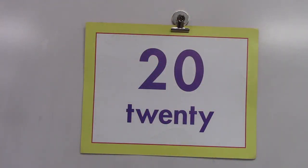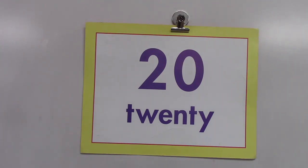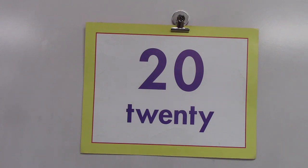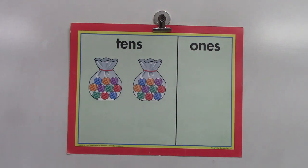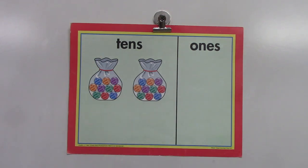Today is the 20th of March, and we're going to look at the number 20 today. Is 20 an even number or an odd number? That's right — it's an even number because it ends with a zero. There are two digits in the number 20. The first digit is in the tens place, telling us there are two groups of 10. There's a zero in the ones place, which means there aren't any extra ones at all. We can see that there are two groups of 10 in our 20, and nothing else.